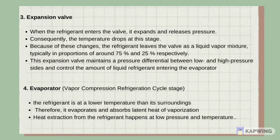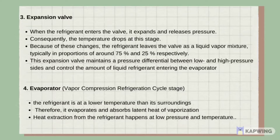The expansion valve maintains a pressure differential between the low and high pressure sites and controls the amount of liquid refrigerant entering the evaporator. The last component is the evaporator, which is the final stage of the vapor compression refrigeration cycle. At this stage the refrigerant is at a lower temperature than its surroundings, so it evaporates and absorbs latent heat of vaporization. Heat extraction from the refrigerant happens at low pressure and low temperature.